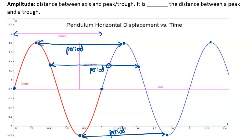The peaks are all the high points and the troughs are all the low points, with multiples because of the repeating pattern. The equation of the axis is labeled on the graph, and its equation is the y value — in this case, y equals 0.8. We generally call that the EOA, the equation of the axis.